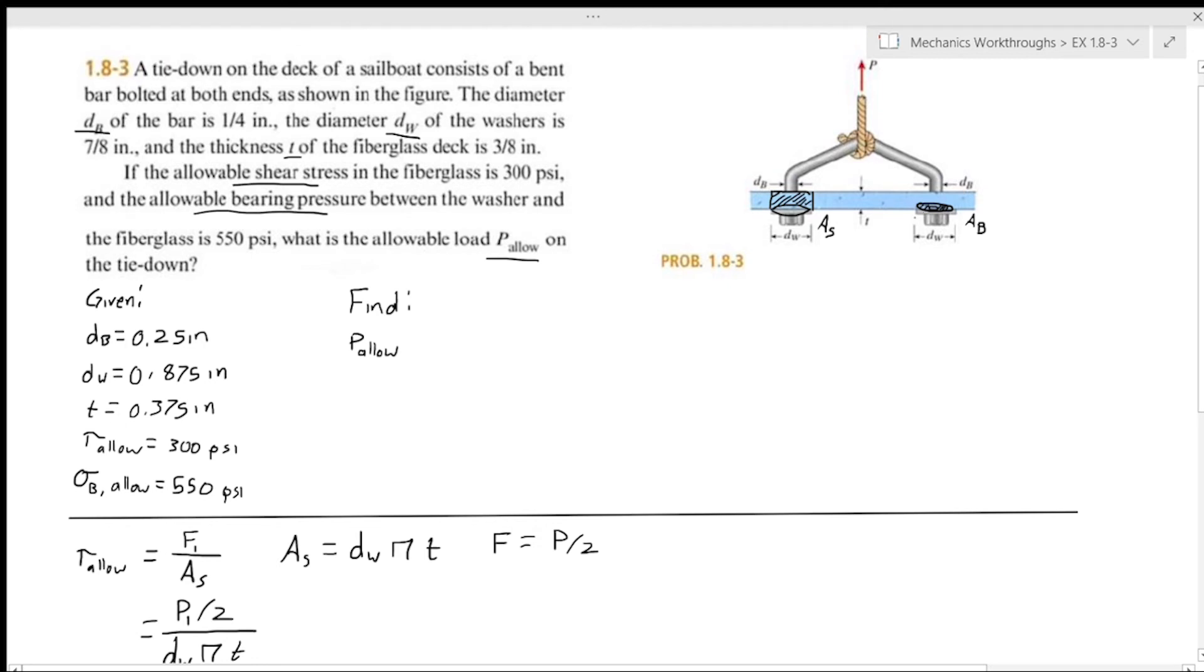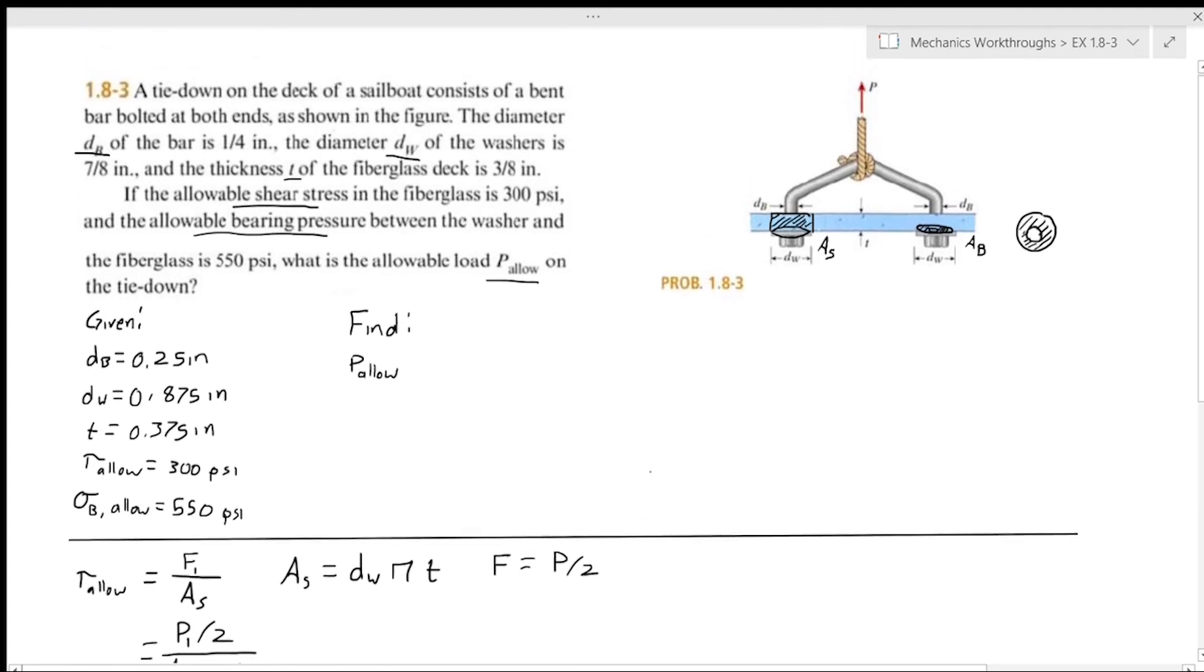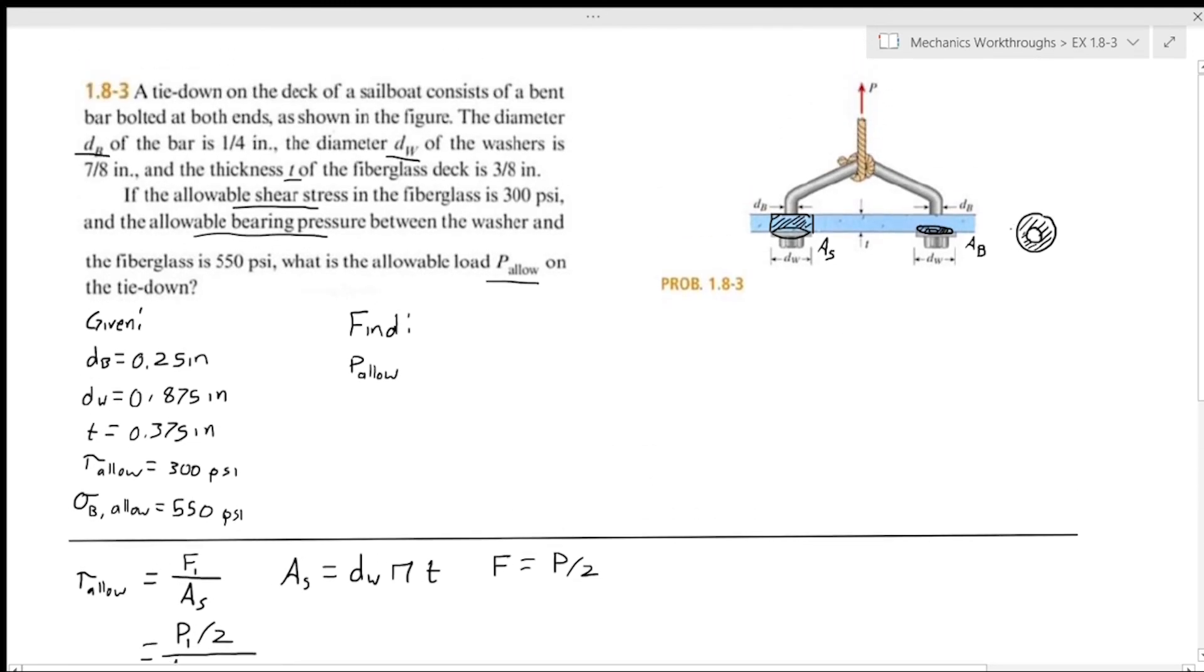That's what we talked about over here, which is basically the area of a washer. We have an outer circle and an inner circle, and you have to find the area between the two. That will be the area over which the washer is pressing onto the fiberglass. So our bearing area is going to be pi/4 times (d_washer^2 - db^2). dw is the diameter of this outer circle and db is the diameter of the inner circle.